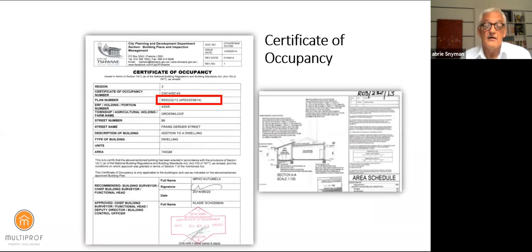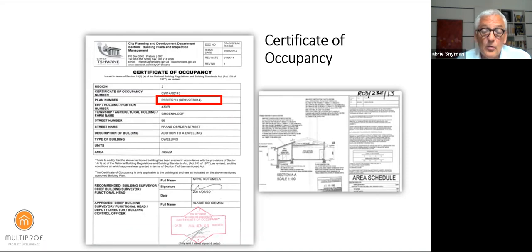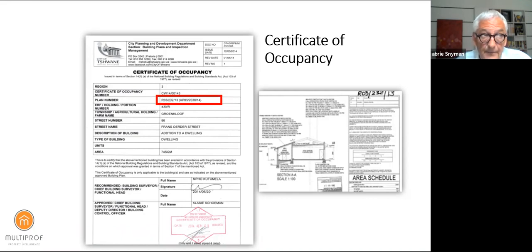For every structure, you eventually also need a certificate of occupancy. A building plan indicates what you plan to build, and what people plan to build and what they actually build is often not the same thing. Once you have erected the structure with the approved building plan, within one year you need to get an inspection by a building inspector as part of the process to obtain a certificate of occupancy. The inspector will determine if the structure conforms with the approved building plan and therefore complies with the National Building Regulations.